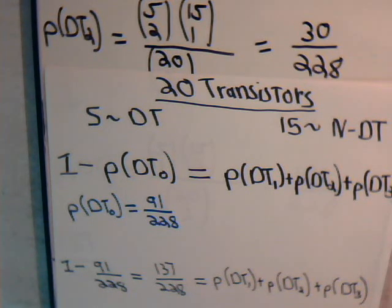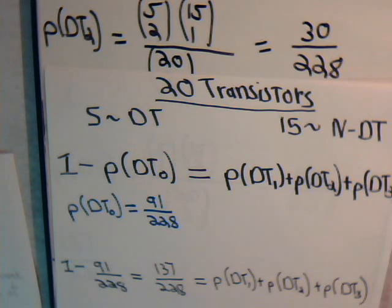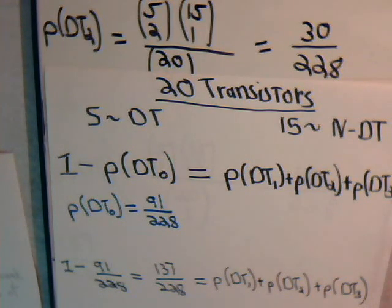Collectively that is the probability of selecting at least one defective transistor. We chose this problem because it's an elegant demonstration of how we can use combinations to solve different types of probability problems. In the next video, example number six, we'll consider a slight variation of this problem, and in example number eight we'll rework it using the principles of conditional probability. Come back and join us for those videos.